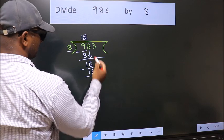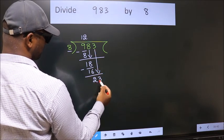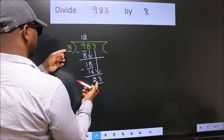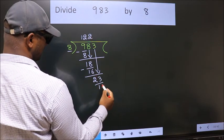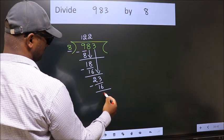After this, bring down the beside number. So, 3 down. So, 23. A number close to 23 in the 8 table is 8 twos, 16. If we subtract, we get 7.